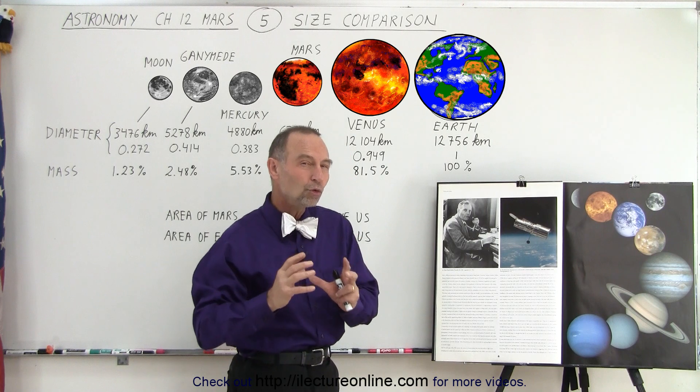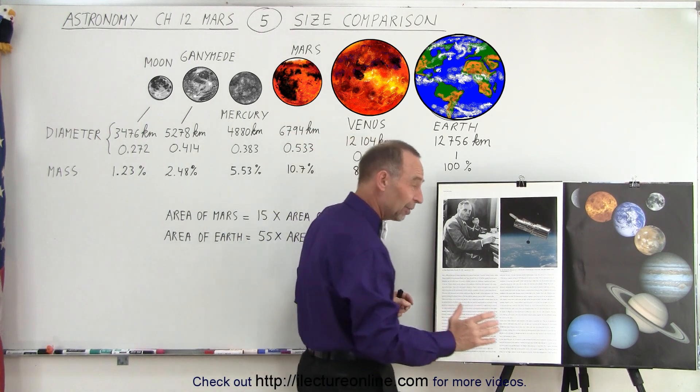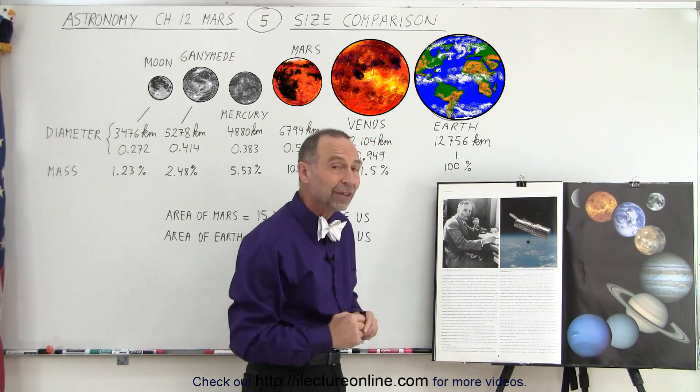Perhaps the only two planets that look somewhat similar to each other, and they're fairly similar in size, may be Uranus and Neptune.